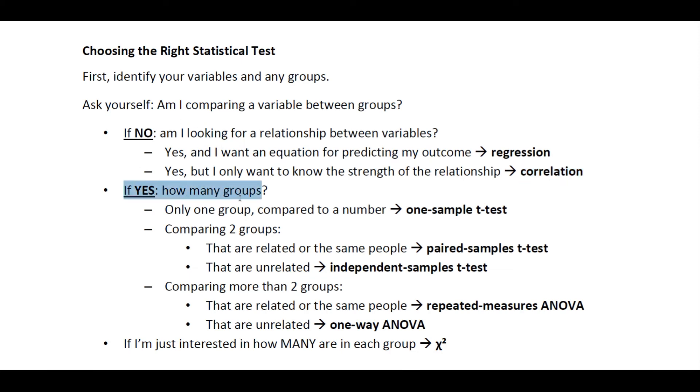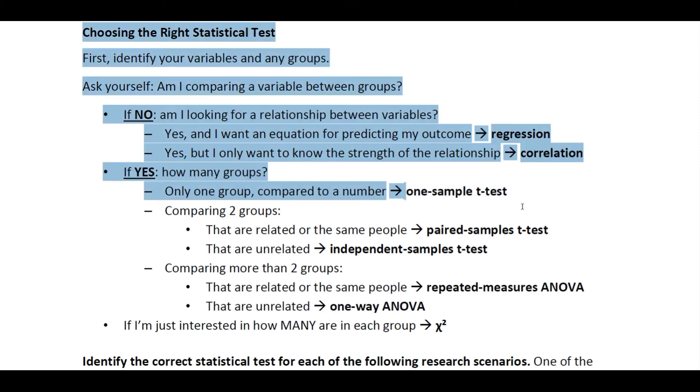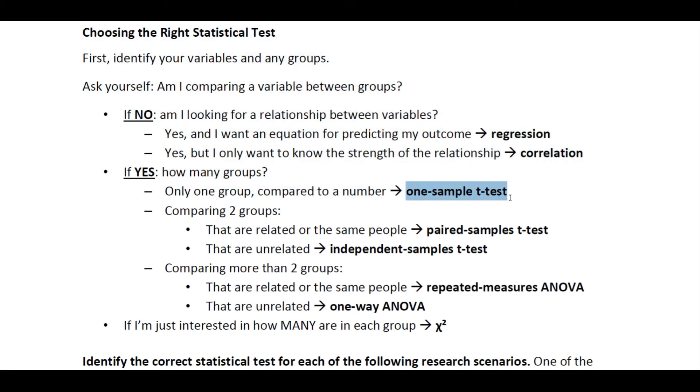Now, if you are comparing a variable between groups, then it matters how many groups. If we only have one group, compared to a given value or number, then we're running a one-sample t-test. If we're comparing two groups, if those two groups are related or the same people, it's a paired-samples t-test. If they're not related in any way, it's an independent samples t-test.